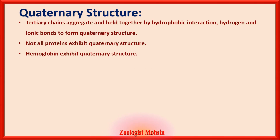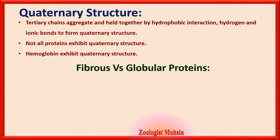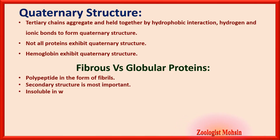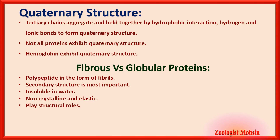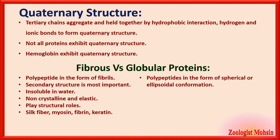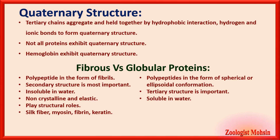Fibrous proteins: polypeptides are in the form of fibrils. Secondary structure is most important in fibrous proteins. They are insoluble in water, non-crystalline, and elastic — meaning their shape can easily be changed. They play structural roles, for example silk fiber, myosin, fibrin, and keratin. Globular proteins: polypeptides are in spherical or ellipsoidal conformations. Tertiary structure is most important in globular proteins. They are soluble in water and can be crystallized — opposite features to fibrous proteins.